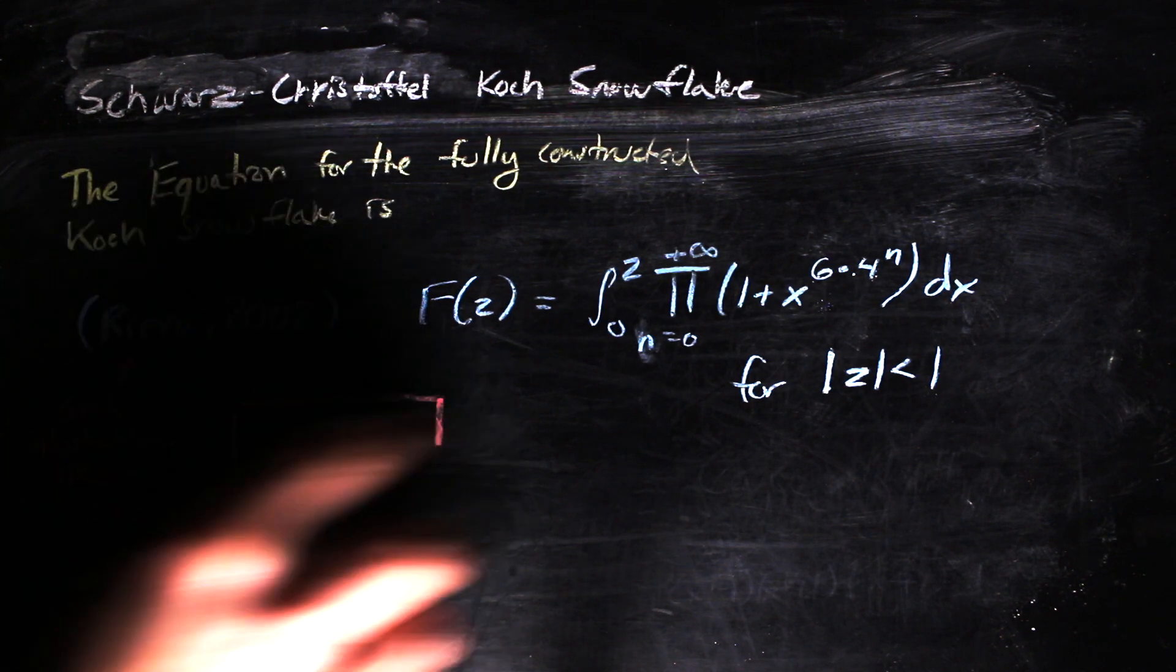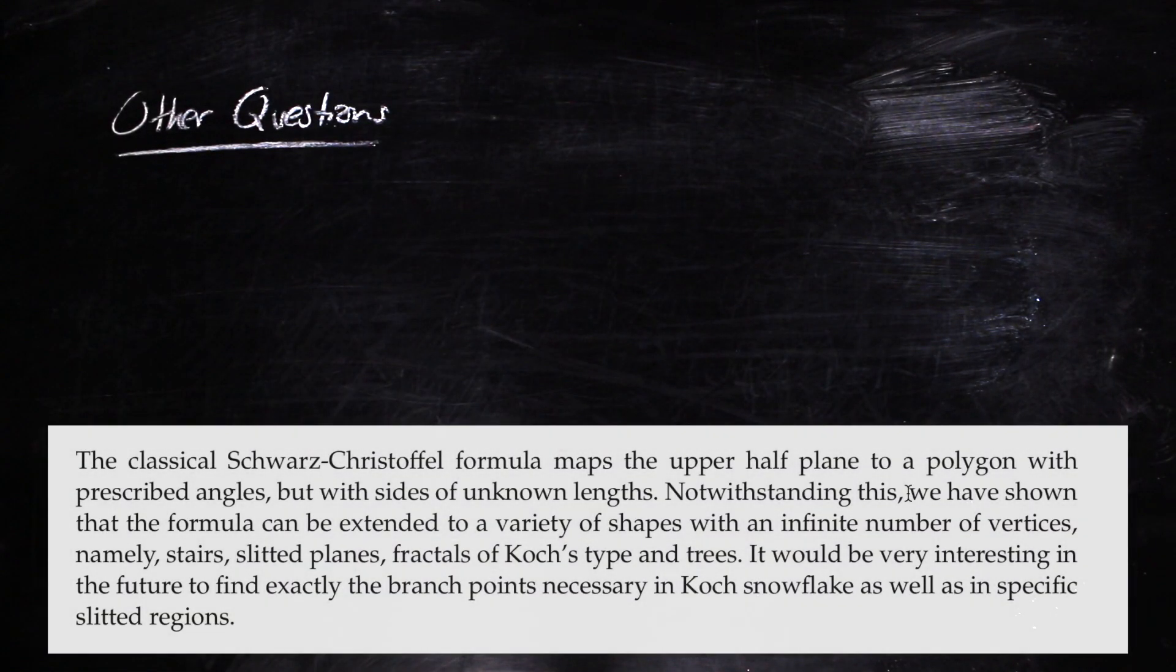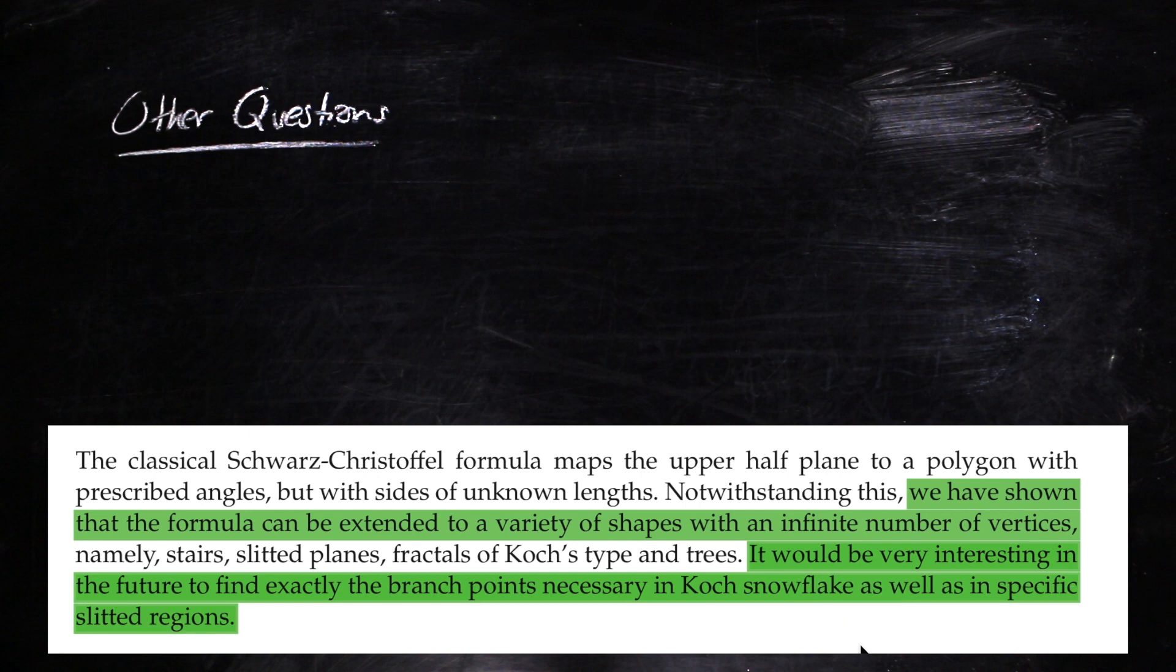Riera's paper is actually an extension of the original theory behind Schwarz-Christoffel maps. As he mentions in his conclusion, quote, we have shown that the formula can be extended to a variety of shapes with an infinite number of vertices. It would be very interesting in the future to find exactly the branch points necessary in Koch snowflake as well as in specific slitted regions, end quote.